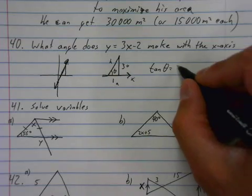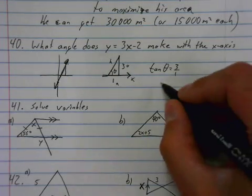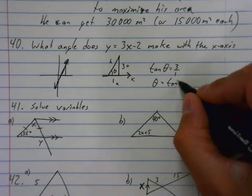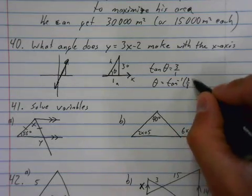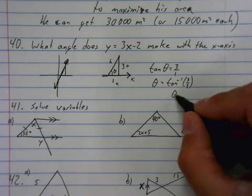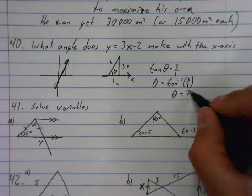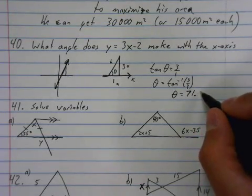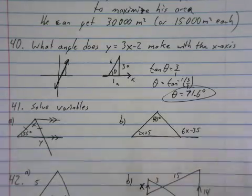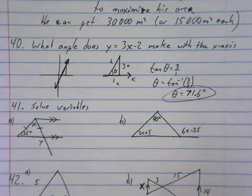So the tan of theta is equal to 3 over 1, and then to solve for the angle, we always use an inverse. So the tan inverse of 3 over 1, shift, tan of 3, theta is equal to 71.56, or 71.6 degrees. Easy enough?